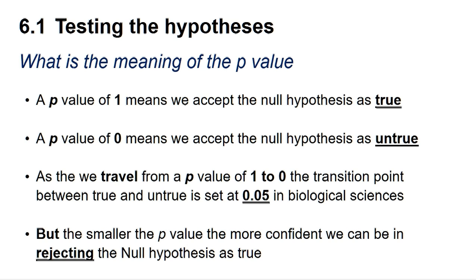A p-value of 1 means we can accept the null hypothesis as true, whereas a p-value of 0 means we can accept the null hypothesis as untrue. As we travel from a p-value of 1 to 0, the transition point between true and untrue is set at 0.05 in the biological sciences.